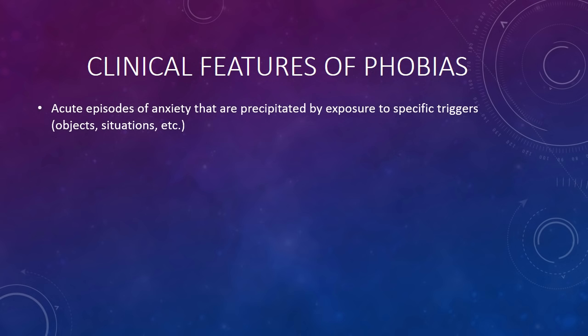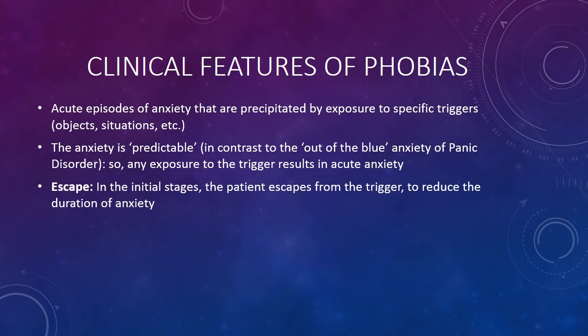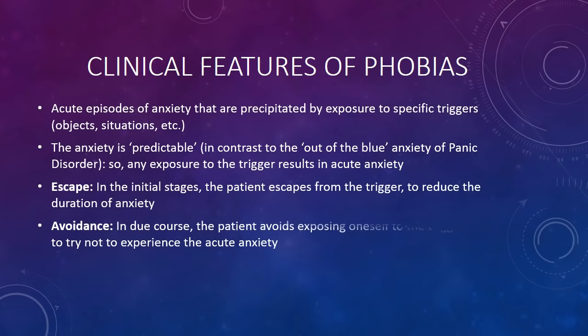We will now look at the clinical features of phobias. Phobias are characterized by acute episodes of anxiety that are precipitated by exposure to specific triggers — objects or situations. The anxiety in phobias is predictable, in contrast to the unpredictable, out-of-the-blue anxiety that occurs in panic disorder. Any exposure to the trigger predictably results in acute anxiety. A patient with phobia initially demonstrates escape from the trigger to reduce the duration of anxiety; in due course the patient exhibits avoidance.